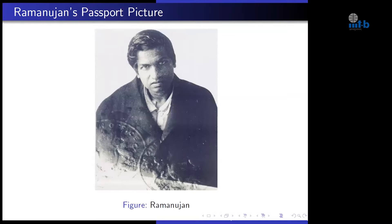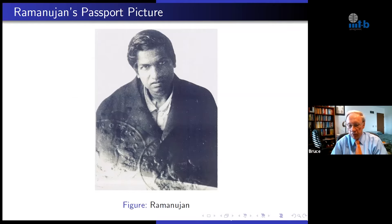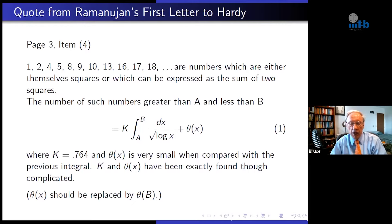There are four photographs of Ramanujan. This is the most frequently used photograph — it's his passport picture taken prior to his return to India. It looks like he has a suit coat on, but this is actually a bathrobe, and these are his pajamas. He was too sick to go to the photographer to have his photograph taken for his passport. The photographer had to come to the nursing home to take his picture.